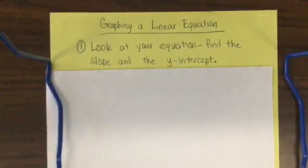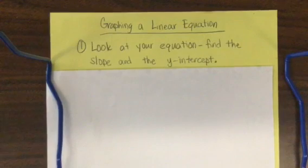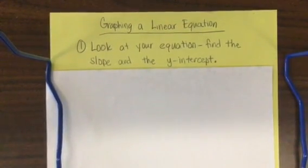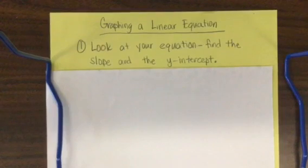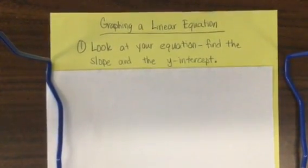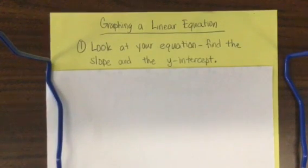The first thing we're going to do is look at our equation and find the slope and the y-intercept. We're going to write both of those pieces of information down so that we have them for later, because we're going to need both of those things in order to graph.